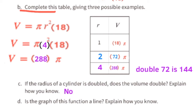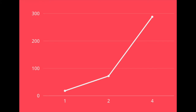So the answer is no — doubling the radius does not double the volume. Part d: is the graph of this function a line? Explain how you know. I've graphed these three points and as you can see, they do not form a straight line.